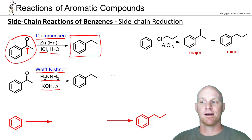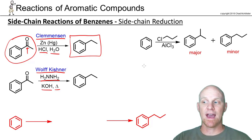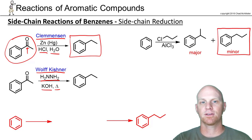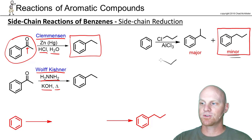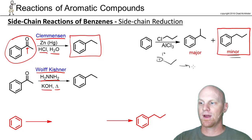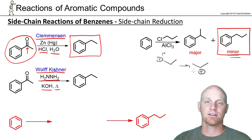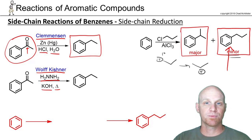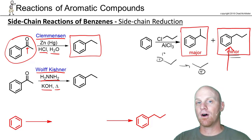One of the big reasons these reactions matter for synthesis is that we have trouble with certain Friedel-Crafts alkylations making certain products. For example, if we try to make a primary alkyl product via alkylation, we go through a primary carbocation, which rearranges to a secondary carbocation via hydride shift — so the major product ends up being the rearranged one. The question is: how do we make the unrearranged product the major product? We wouldn't do it through Friedel-Crafts alkylation.